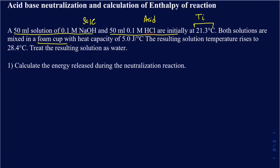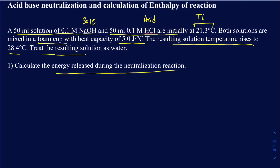The foam cup has a heat capacity given as 5 joules per degree Celsius. It's also very likely you assume the heat capacity of the foam cup to be zero, meaning it's a very good insulator and won't lose energy to the cup or surroundings. Alternatively, you could measure the heat capacity before running the neutralization reaction. The resulting solution temperature rises to 28.4°C, and you need to figure out the energy released during the neutralization reaction.